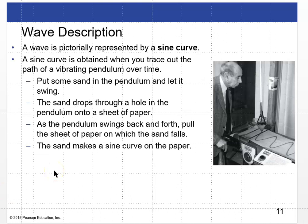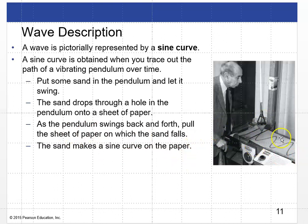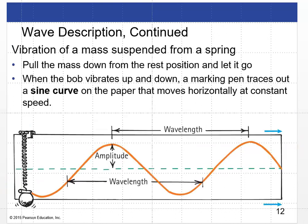A wave is pictorially represented with a sine curve. A sine curve is obtained when you trace out the path of a vibrating pendulum over time. Here's an old-fashioned apparatus for doing this: you put sand in a cup that is the pendulum, with a hole in the bottom letting sand dribble out. As the pendulum swings and paper cranks past, the sand traces out a sine curve. Similarly, a spring with a weight and a pen traces out a sine wave on moving paper.